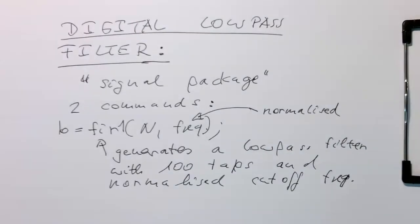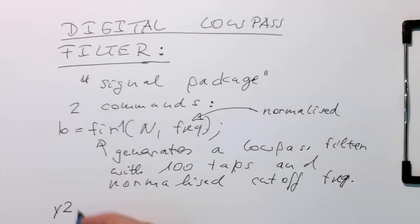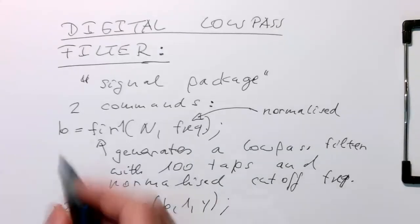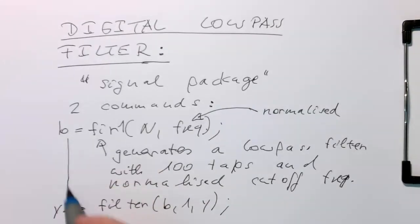So then the other command, which directly generates our result, is the actual FILTER command. So if we write Y2 = filter(B, 1, Y), then this B here, these are the coefficients which we have generated. And then this filters the signal Y and generates the output Y2.